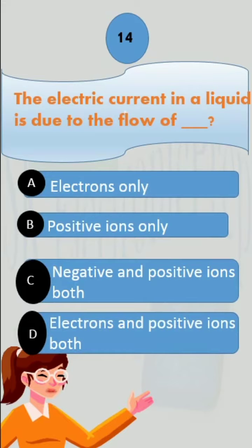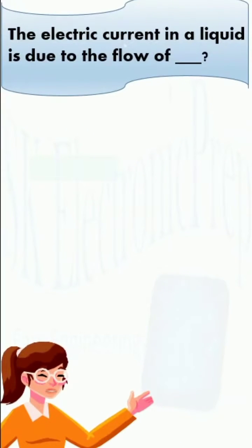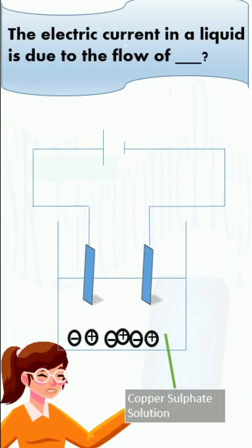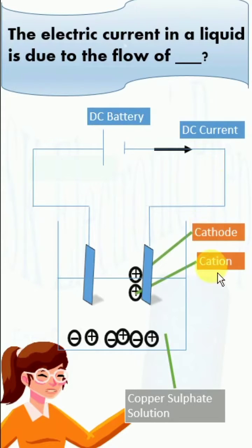No electrons travel within a liquid. Yet, when negatively and positively charged electrode plates are placed in the liquid, an electric field is created. Hence, we have connected a DC battery and DC current flows through the electrodes.